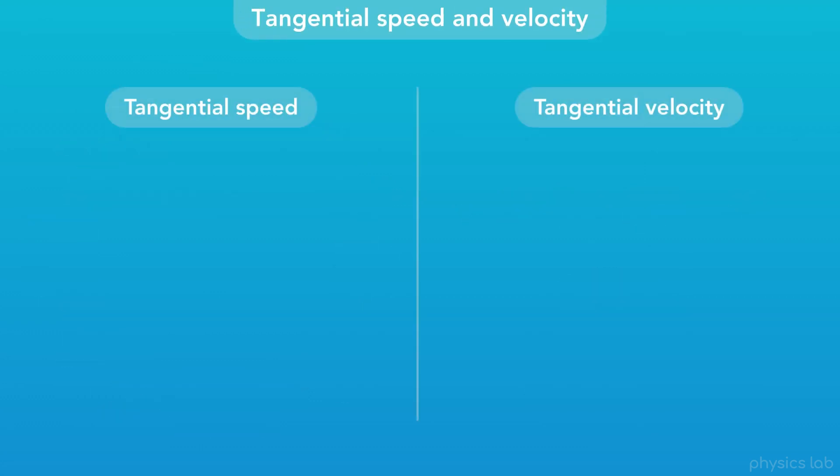Now let's talk about the difference between tangential speed and velocity. Remember that speed is a scalar. It only includes the magnitude of the velocity, and it's always a positive number. But velocity is a vector. It includes both a magnitude and a direction, and it can be positive or negative.